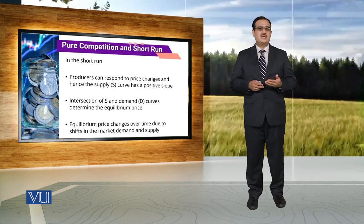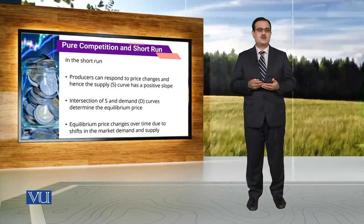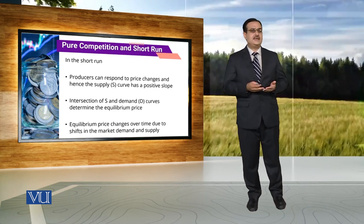जब आप short run की बात करते हैं तो short run में यह एक market structure है where producer can make an adjustment about variable factors of production. Because of that adjustment in their variable factors of production, the supply curve that we observe under the short run is a positively sloped curve.